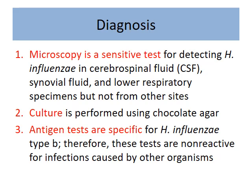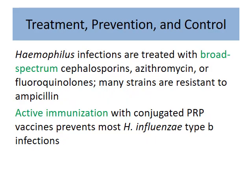For diagnosis, microscopy is a sensitive test. Culture on chocolate agar is used, and antigen-specific tests are performed when HiB infection is suspected. Broad-spectrum antibiotics are given for treatment, and active immunization with the PRP vaccine is the most important recommendation. Advanced cases are now very rarely seen and mainly observed in Asia and Africa.